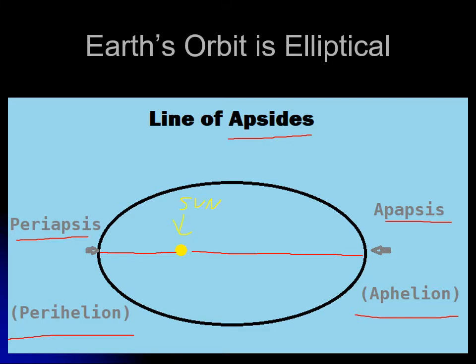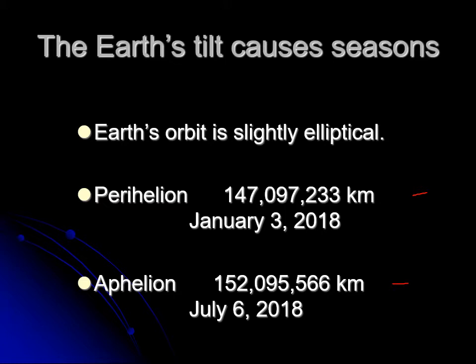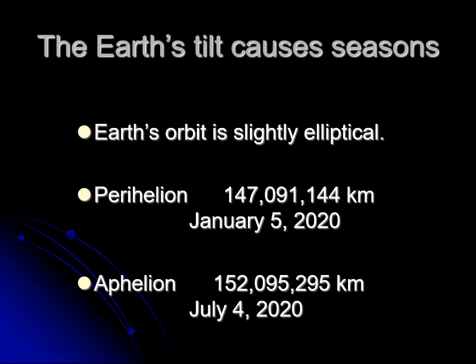As Earth goes around the sun, the perihelion and aphelion dates shift a little bit. The perihelion in 2017 was January 4th and the aphelion was July 3rd. In 2018, the distances are very slightly different — perihelion was January 3rd and aphelion July 6th. In 2019, perihelion was January 3rd and aphelion July 5th. In 2020, perihelion was a little later — January 5th — and aphelion a little earlier — July 4th.